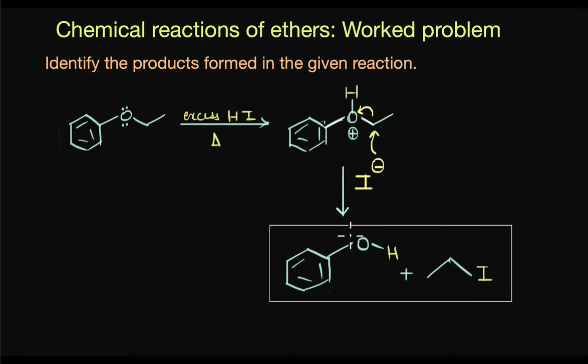So the final products are phenol and ethyl iodide. So easy to remember that whenever we treat phenolic ethers with excess of hydrohalic acids like HI or HBr, the product is always phenol and corresponding alkyl halide.